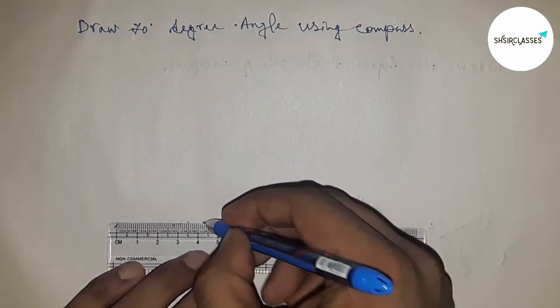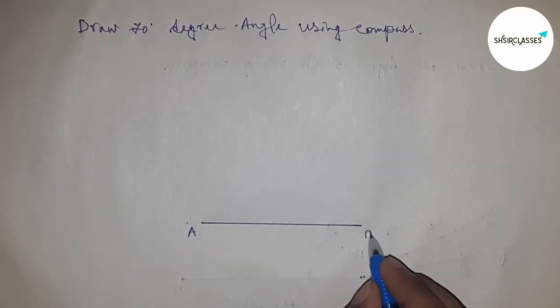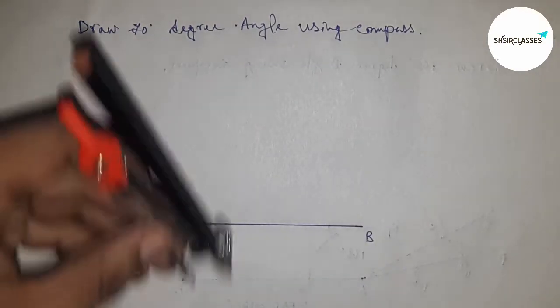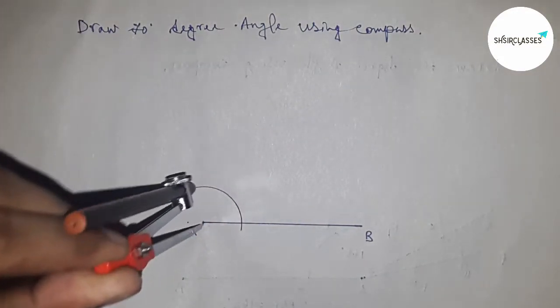First of all, draw a line here of any length, and this is AB. Next, we have to construct the angle on point A. So, taking any length and putting the compass here and drawing